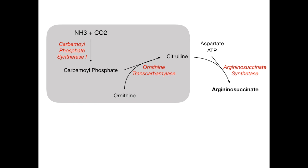When you're filling out biochemical pathways, if you're not sure what the enzyme is or what the product or reactants are, try to think about the enzyme name. For example, argininosuccinate synthetase — the word 'synthetase' always tells you that whatever comes before it is being synthesized. So in this case, the enzyme must be forming argininosuccinate. Hence, citrulline combines with aspartate and ATP to form argininosuccinate.